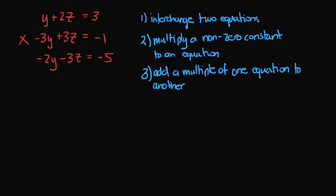The first rule is that we can interchange two rows. For example, we could interchange row one and row two. The notation for this is ri with a double-headed arrow rj.